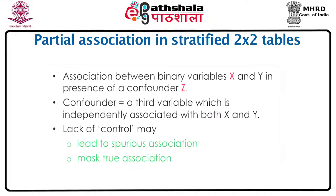Note that the association between z and x, and the association between z and y, are not necessarily linked. A violation of this can happen if z is in the causal pathway between x and y. For example, if smoking leads to stress which leads to high blood pressure, then stress is an intermediate variable between smoking and blood pressure and is not considered a confounder. If you are interested in confounders and how we control them, more on this is in the modules on biostatistics.